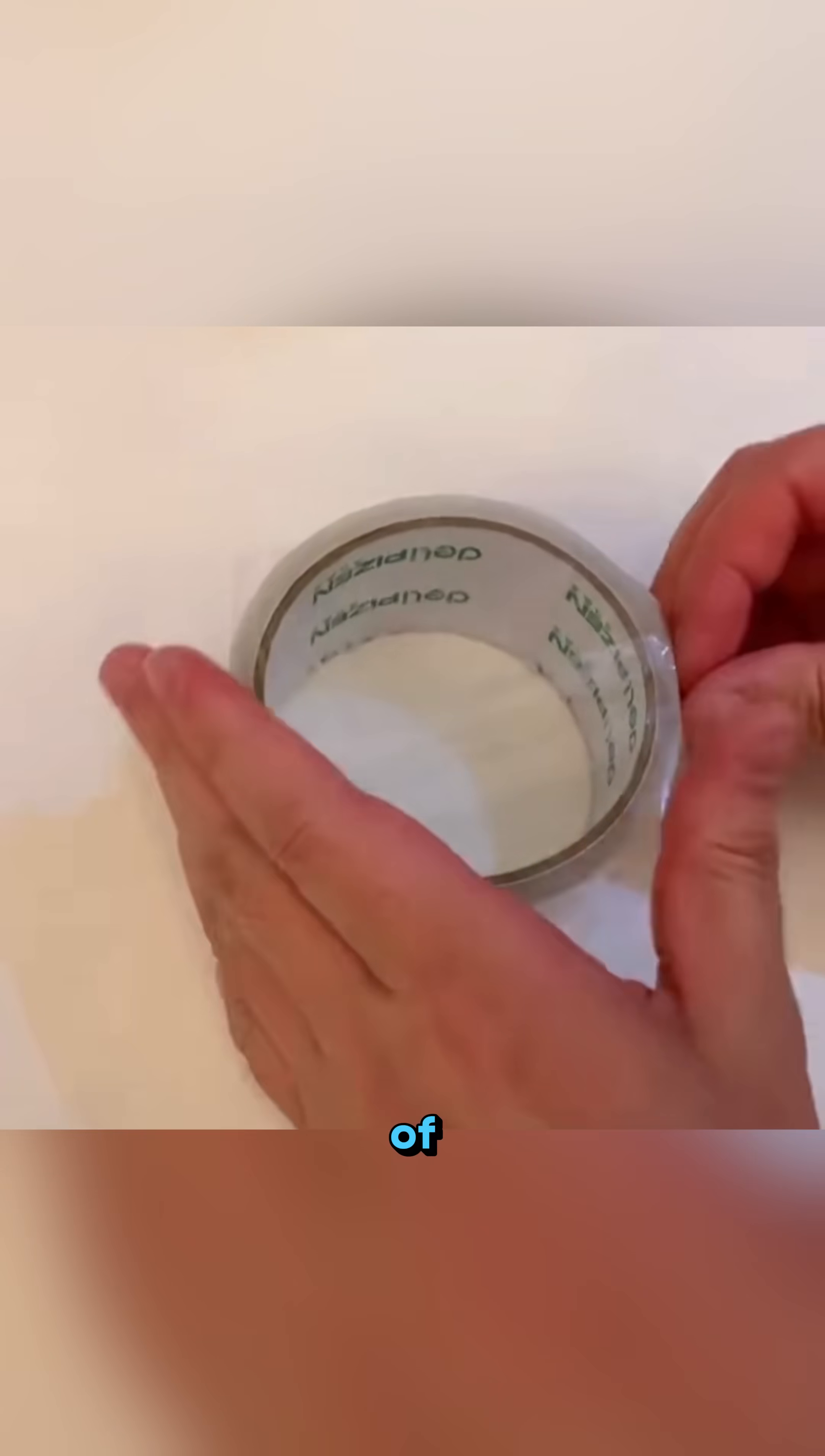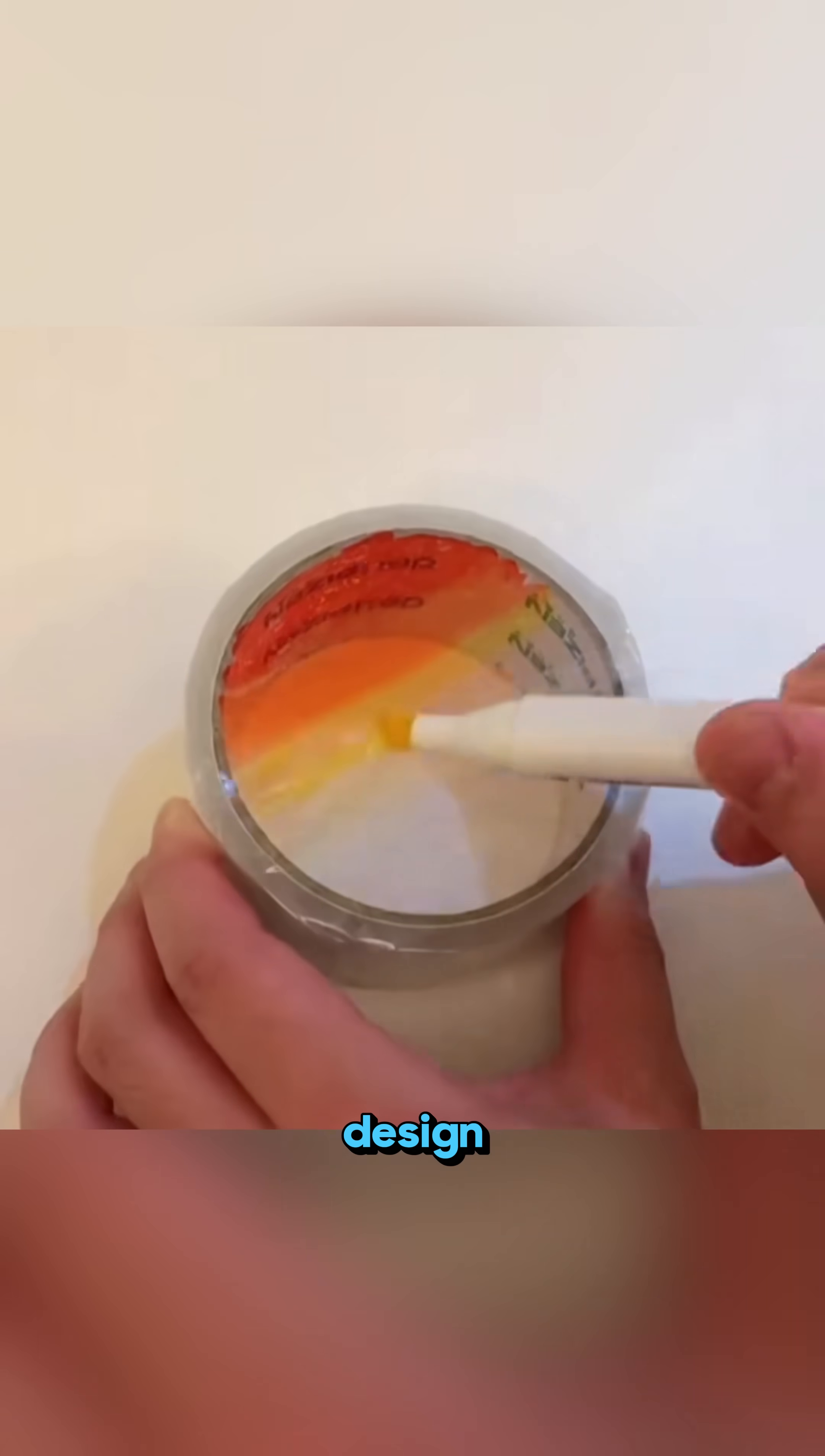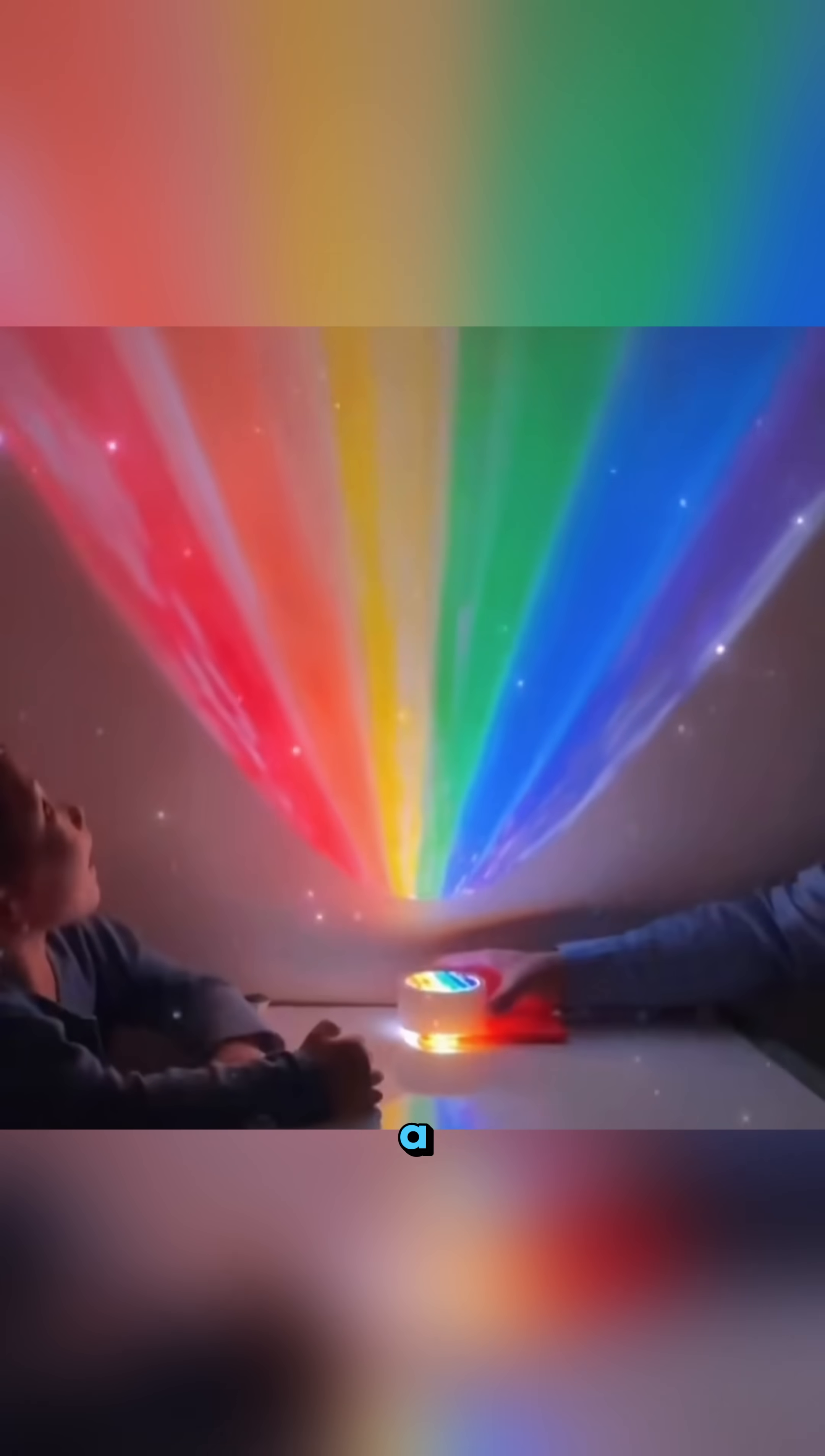Stick two pieces of tape on film, draw your favorite design with markers, and just like that, you've made a rainbow projector that will make kids say wow.